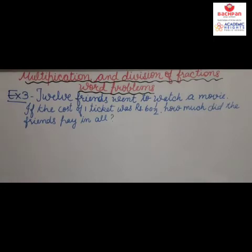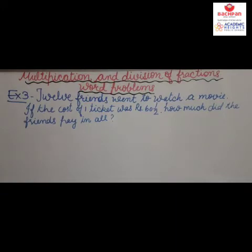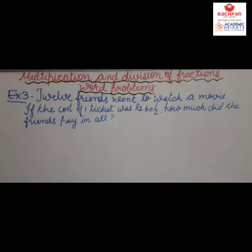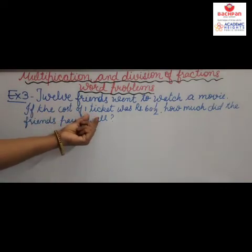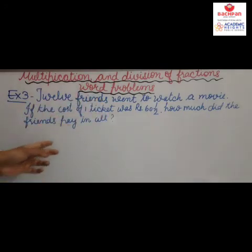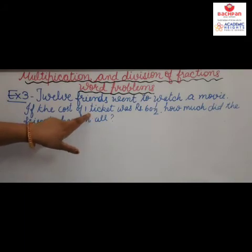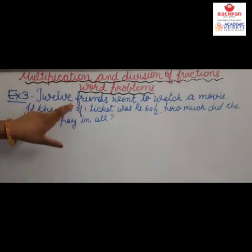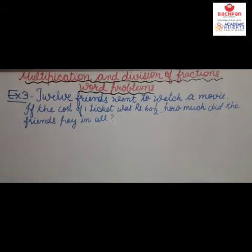Example 3: 12 friends went to watch a movie. How many friends? 12 friends. They go to watch a movie. If the cost of one ticket is Rs. 16 and 1/2, how much did the friends pay in all? Here, the cost of one ticket is given and we have to find the cost of 12 tickets, so we do multiply.